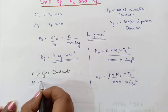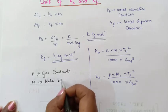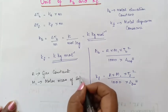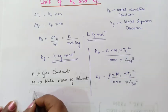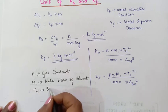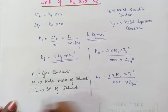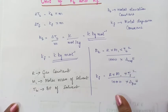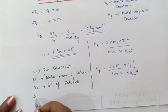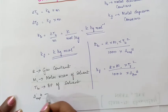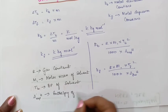M1 is nothing but molar mass of solvent. Tb is nothing but boiling point of solvent. And delta H vaporization is enthalpy of vaporization.